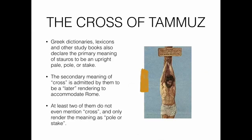Greek dictionaries, lexicons, and other study books also declare the primary meaning of 'stauros' to be an upright pale, pole, or stake. The secondary meaning of 'cross' is admitted to be a later rendering to accommodate Rome. At least two of them do not even mention cross and only render the meaning as pole or stake.